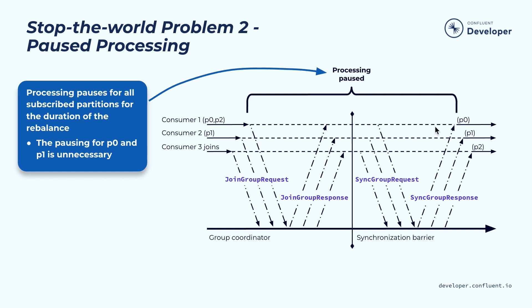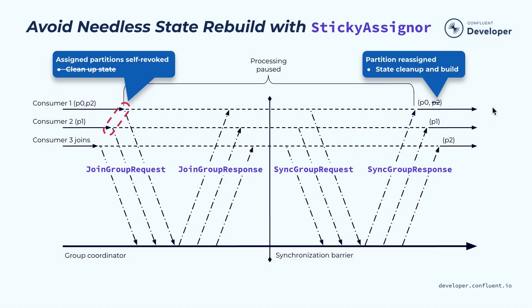Now let's look at some of the improvements we have made to address these two issues. The first thing is we are using an improved version of the sticky partition assigner to address the issue where states need to be rebuilt unnecessarily. The improvement is that during the rebalance, we won't initially clean up the state at the beginning of the rebalance. Instead, we try to rebuild the state only when the new partition assignment has been reached. Since partition zero and partition one are assigned back to the same instance, they actually don't need their state rebuilt.